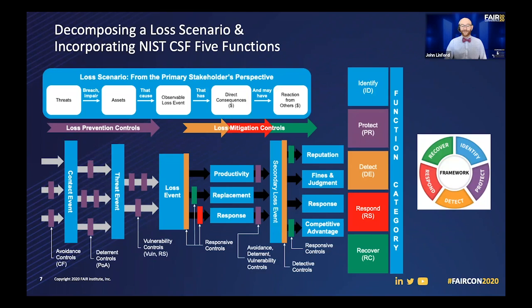We can see here that final image — this is probably way too much information at once, but rest assured that within the risk analysis standard we do break this down step by step. We first present that top blue box of the loss scenario, which we deliberately specify is always from the perspective of the primary stakeholder. Then we break it down for our loss event frequency side of things, going from our contact event to threat event to loss event. Then we look at the loss magnitude side of things going from our loss event to secondary loss event with those different loss forms. Finally, all together at the very end, we pull it all back together and incorporate the NIST CSF 5 functions and their color scheme to show just how well these work together.